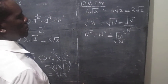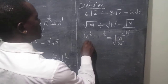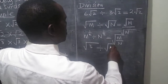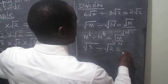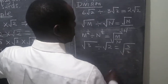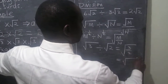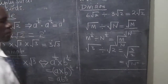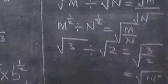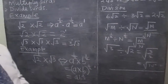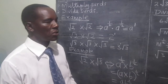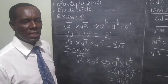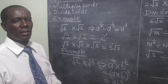We can look at an example. Root three divided by root two will simply become the square root of three over two, which is the same as the square root of one point five. So we stop there for now. In the next lesson, we will look at further simplification by multiplying by the conjugate when we are dividing sides.